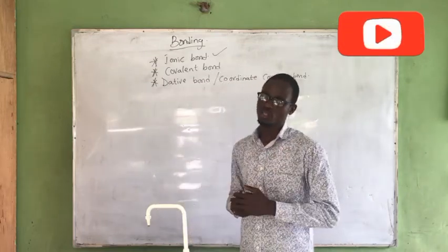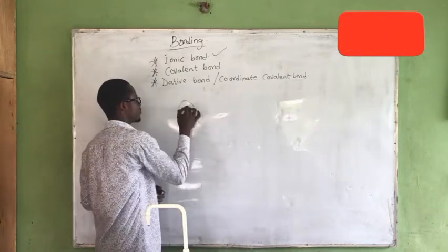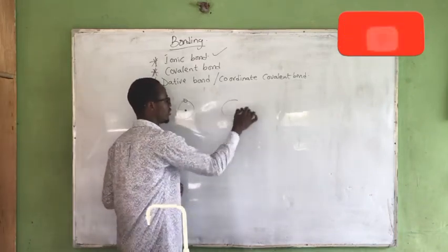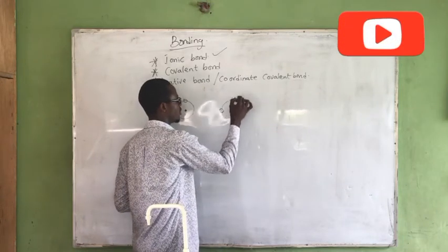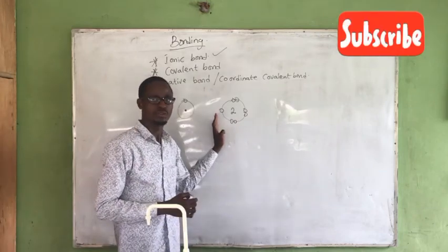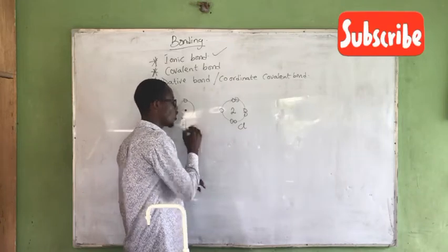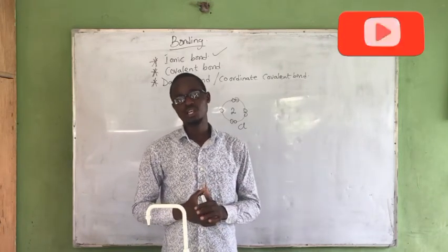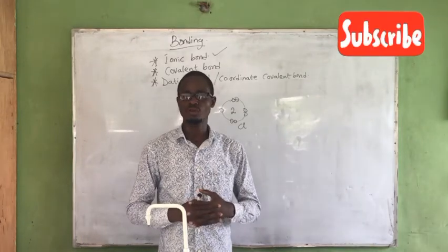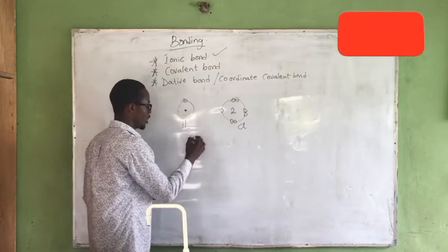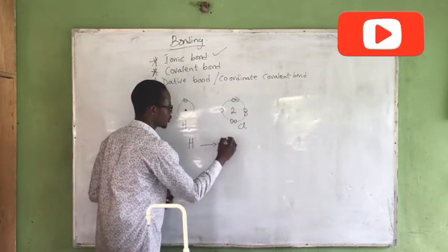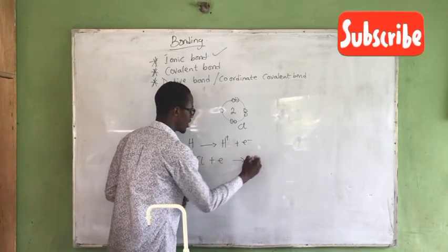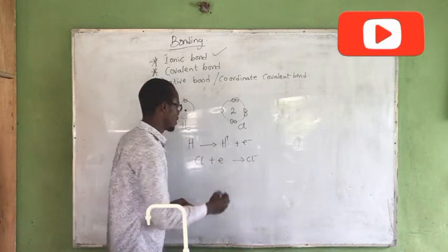Let us look at hydrogen and chlorine as a point of reference. Hydrogen uses the first shell and has one electron. Chlorine has two and seven electrons in its outer shell. There is just one electron needed for hydrogen to complete its duplet configuration. So hydrogen loses an electron to bond with chlorine, and chlorine accepts the electron. Hydrogen loses its electron to form H⁺, and chlorine accepts the electron to become Cl⁻.